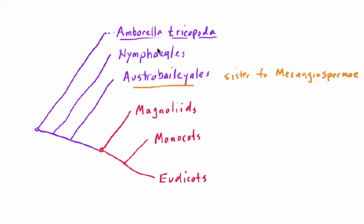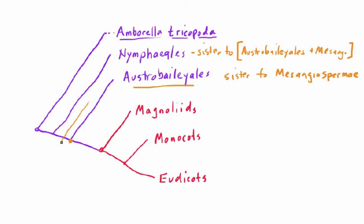Similarly, you could say that the Nymphaeales is a sister group to the clade consisting of the Austrobaileyales plus the mesangiosperms. If you picture that clade — the Austrobaileyales and the mesangiosperms together — the sister group to that clade would be the Nymphaeales, because they're more closely related to each other than to Amborella. Amborella comes off by itself at the very base of the tree.